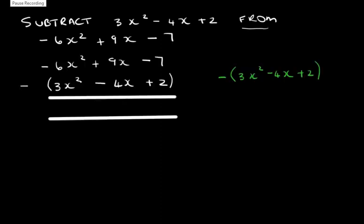Before we continue, I want to remind you of something. When we have a negative in front of an expression, that is actually an invisible one, and we must multiply that invisible one into the bracket so that all the signs will change.